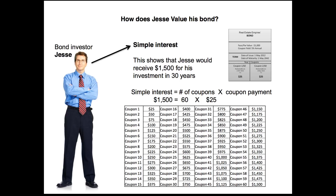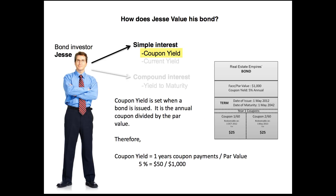We're not counting the $1,000 he used to buy the bond initially or the $1,000 he gets back at maturity — we're just valuing the coupon payments, because that's the money he made on the investment. When we talk about coupon yield under simple interest, you take one year's worth of coupon payments ($50) and divide by the par value. That gives you the coupon yield of 5%. That's all there is to coupon yield — it's that simple.